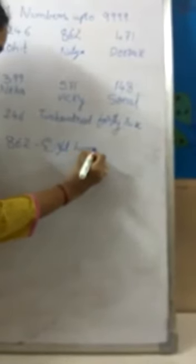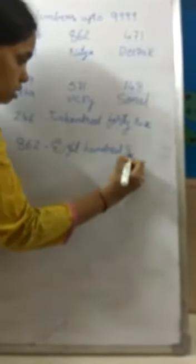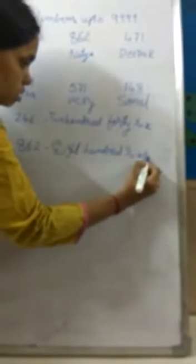Now, the second child is Nithya. What is the house number of Nithya? It is 8, 6, 2 — that is 862. Write down 862 and write the number name of 862. Start from the hundreds place — 8 is in the hundreds place, so write 'Eight hundred', and then combine the tens and ones which is 62, giving 'sixty-two'. So the number name is 'Eight hundred sixty-two'.